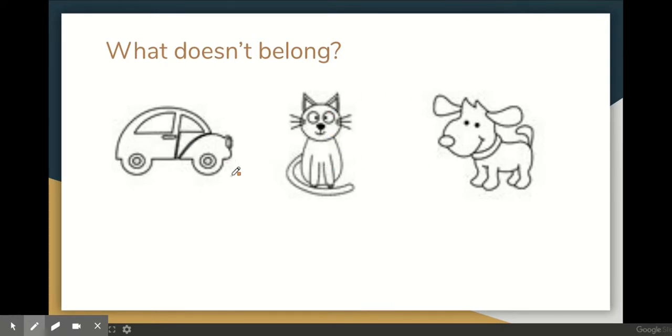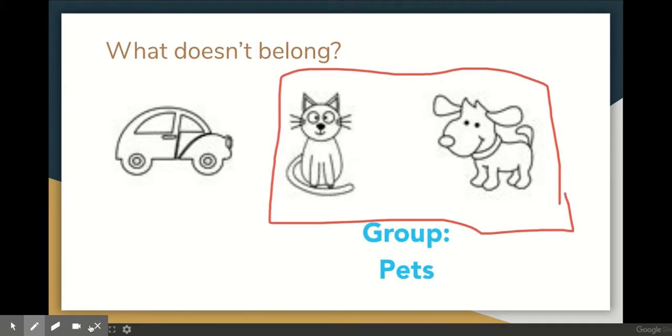Is a car a pet? No, a car is not a pet. So the dog and the cat belong to one group but the car is the thing that does not belong. Or the car can go in its own group. And now we have two different groups. We have the pet group and we have the not pet group.